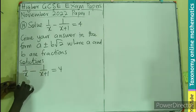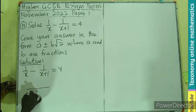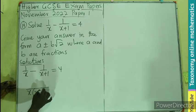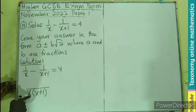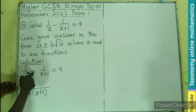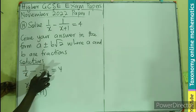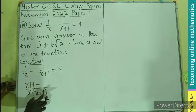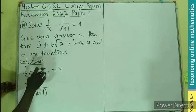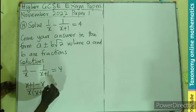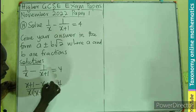So I'll be having the LCM to be x multiplying x plus 1. So when x goes here, it cancels itself, remaining x plus 1. Then minus. When this x plus 1 also goes here, it cancels itself, remaining x times 1 equals to that. That will give you 4.